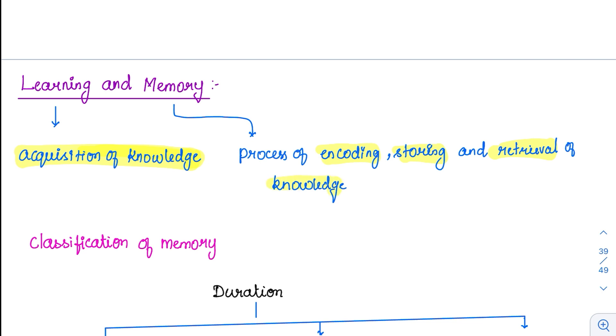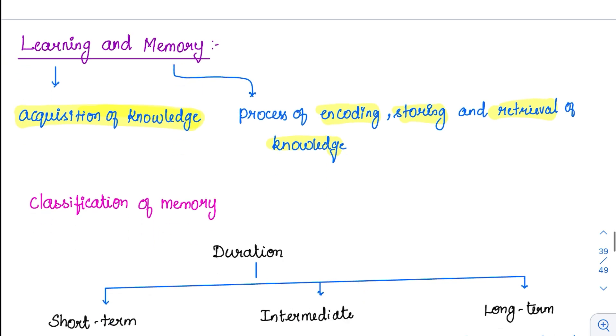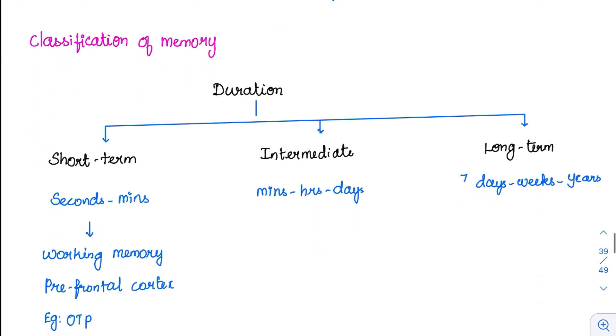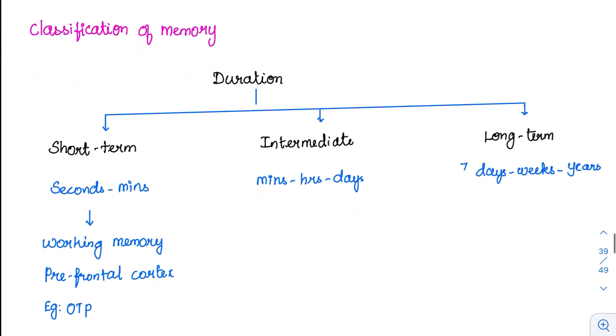Memory can be classified in two ways. One is based on their duration. The memory is classified into short-term, intermediate, and long-term.